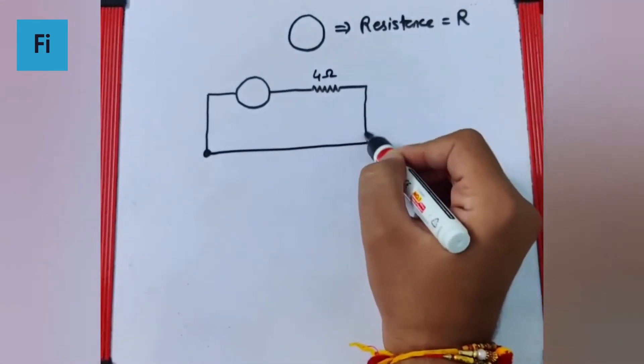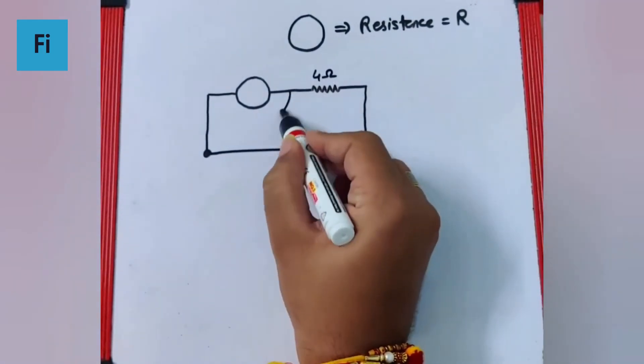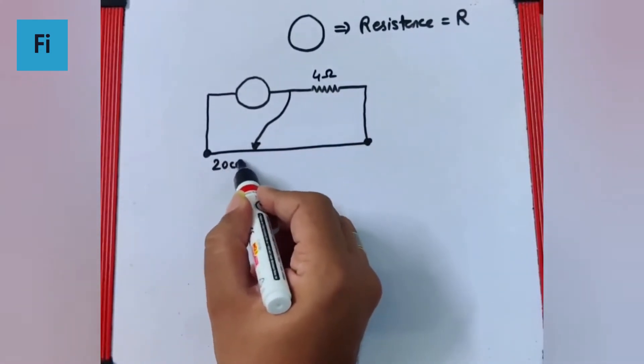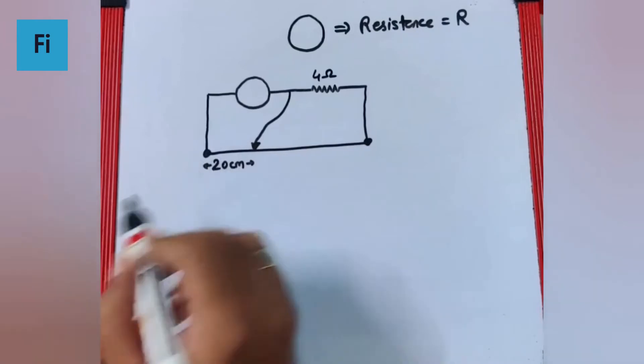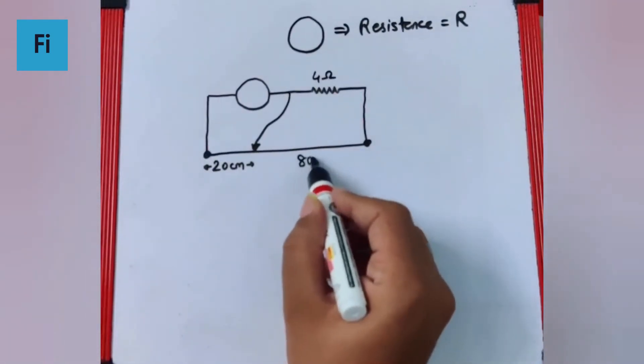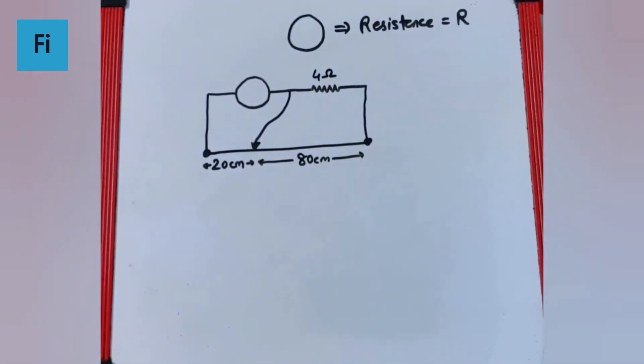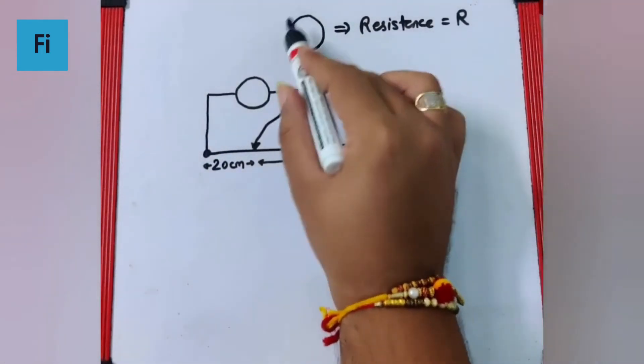For the wire, the balance point which we get is at 20 centimeters. So obviously if this is 20 centimeters for the meter bridge, this is 80 centimeters, correct?